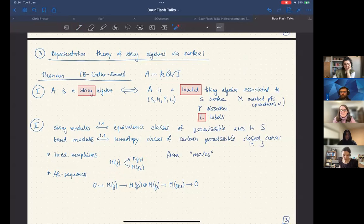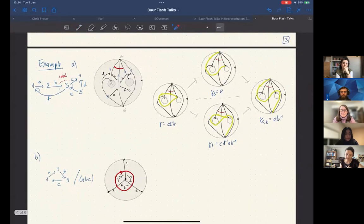Okay, but let me illustrate that on an example with our running algebra. I will not have time to explain how you get the surface, but you can always construct a surface using previous results of Oppermann-Plamondon-Schroll, or my work with Coelho-Morris and of Baur-Platt-Plamondon.